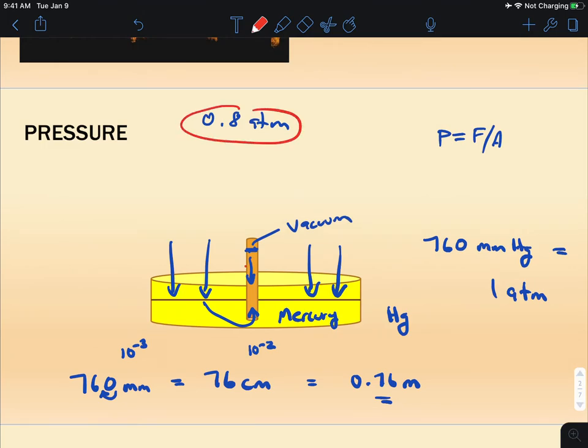So at mile-high stadium, it only might rise to here, the mercury, because there's less air pushing down on this mercury. That's really where air pressure is coming from. So it's also one reason why it's much harder to breathe at higher altitude, because there's lower air pressure.